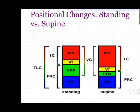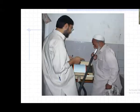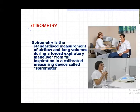Spirometry is usually done in a sitting position, but if done in the supine position there will be certain changes. The main difference is in expiratory reserve volume - the amount of air you can expire will be lower in the supine position because the diaphragm is pushed up. This is the main difference between the two positions. Old spirometry, used about 25 years ago, required the person to blow into a device that moved to record the air volume in relation to time.